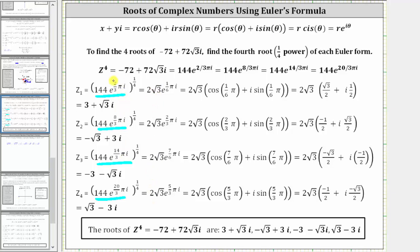The next step is to multiply all the exponents on e by one-fourth. For z sub one, two-thirds pi times one-fourth gives two-twelfths pi i, which simplifies to one-sixth pi i. For z sub two, eight-thirds pi times one-fourth simplifies to two-thirds pi i. For z sub three, 14-thirds pi times one-fourth simplifies to seven-sixths pi i. And for z sub four, 20-thirds pi times one-fourth simplifies to five-thirds pi i.